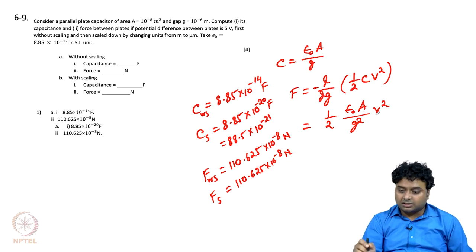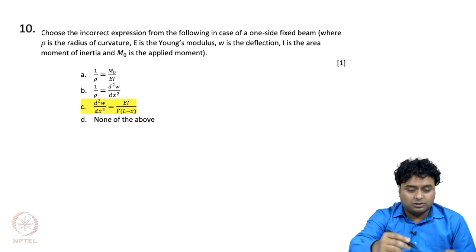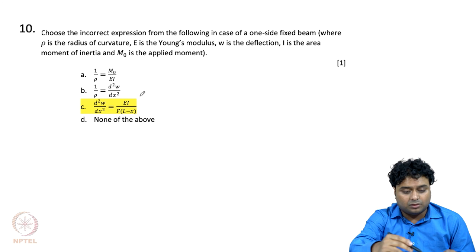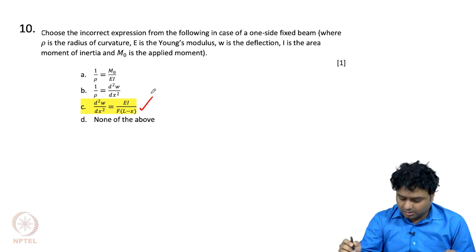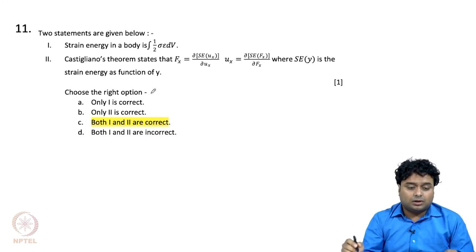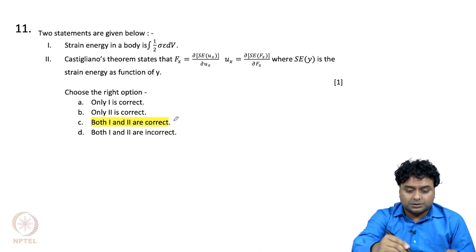For questions 6 to 9, choose the incorrect option. The expressions 1/rho equals M/(EI) and 1/rho equals d²w/dx² are all correct expressions. Option C is not a correct expression, so C is the answer. For the next pair of statements: the strain energy of a body is the integral of (1/2)sigma·epsilon (stress times strain), and Castigliano's theorem — if you see the lecture video, both statements are correct, so the answer is C.